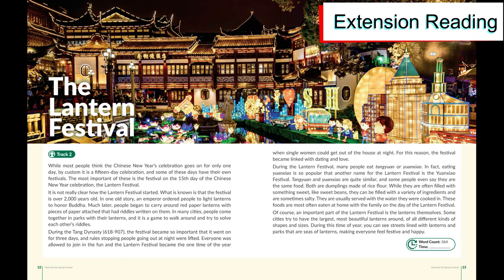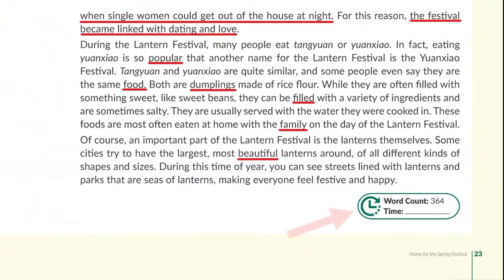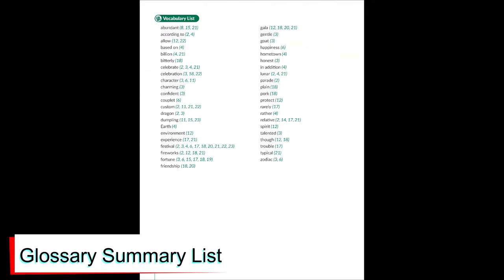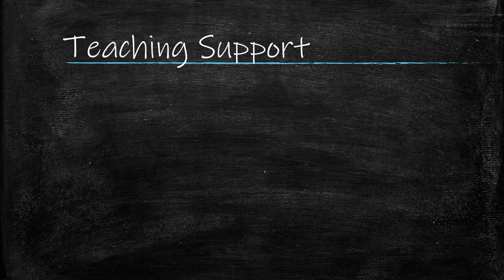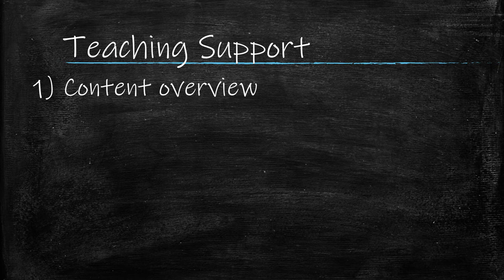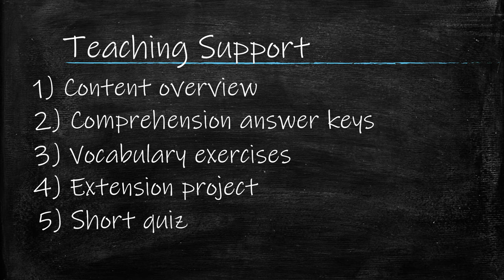Each book ends with a theme-related extension reading — for fun and vocabulary reinforcement — reusing vocabulary from earlier in the book or series, which also helps reading fluency. Editors encourage students to record how long it takes to finish reading, using the online soundtrack as a reference. The book ends with a glossary summary list. National Geographic Learning also provides additional teaching support including content overview, comprehension answer keys, vocabulary exercises, extension projects, and short quizzes.